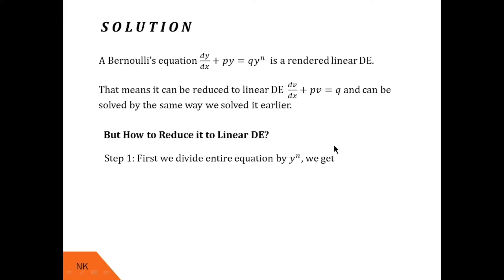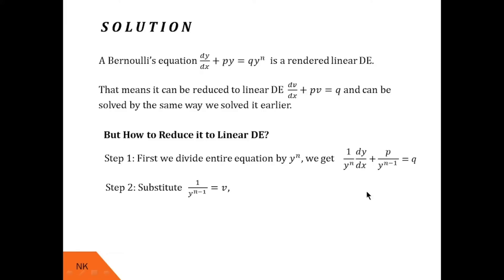In Step 1, we divide the entire Bernoulli's equation by y^n so that the RHS becomes only Q, which is a function of x.